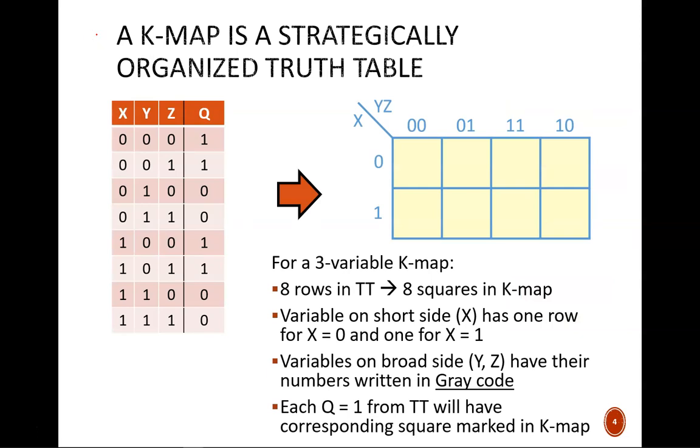A K-map is simply a strategically organized truth table. Here, we see a blank three-input K-map. Notice how the truth table has eight rows and the K-map has eight squares. Each square corresponds to one row in the truth table. Notice how the inputs for the top row have X, Y, and Z all equal to 0. This top left corner of the K-map represents the case where X equals 0, Y equals 0, and Z equals 0. What does Q equal in that row?